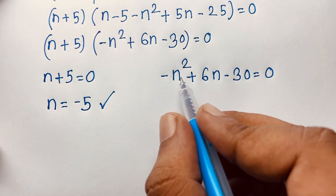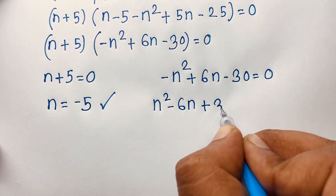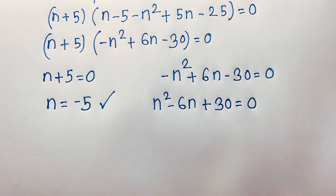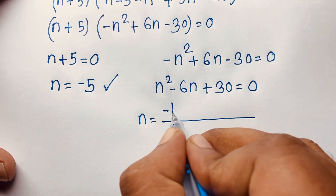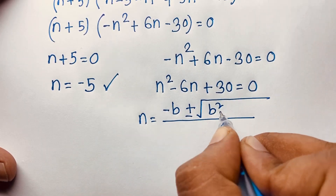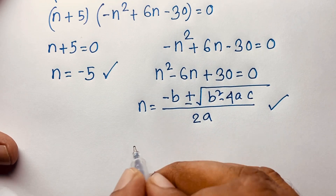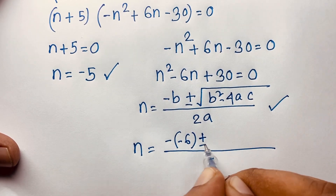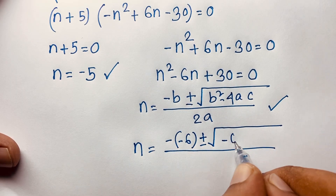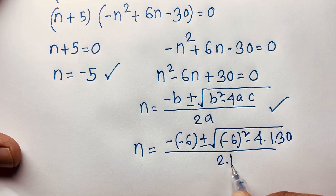For the second case, I take out negative 1 from the quadratic, giving us positive n squared minus 6n plus 30 equals 0. This is a nice quadratic equation. Using the quadratic formula n equals negative b plus or minus square root of b squared minus 4ac, all over 2a, where a equals 1, b equals negative 6, and c equals 30, we substitute: n equals minus of negative 6, plus or minus square root of negative 6 whole squared minus 4 times 1 times 30, over 2 times 1.